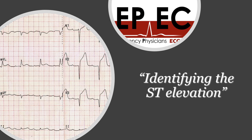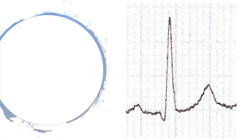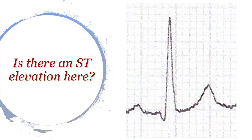Now let's talk about how to identify and measure ST elevation. When you see a complex, ask yourself: is the J point above the baseline, at the baseline, or below the baseline? The J point is the junction between the end of the QRS complex and the beginning of the ST segment. If this point is above the baseline, that is ST elevation; if at the baseline, it is isoelectric; and if below the baseline, it is ST depression.